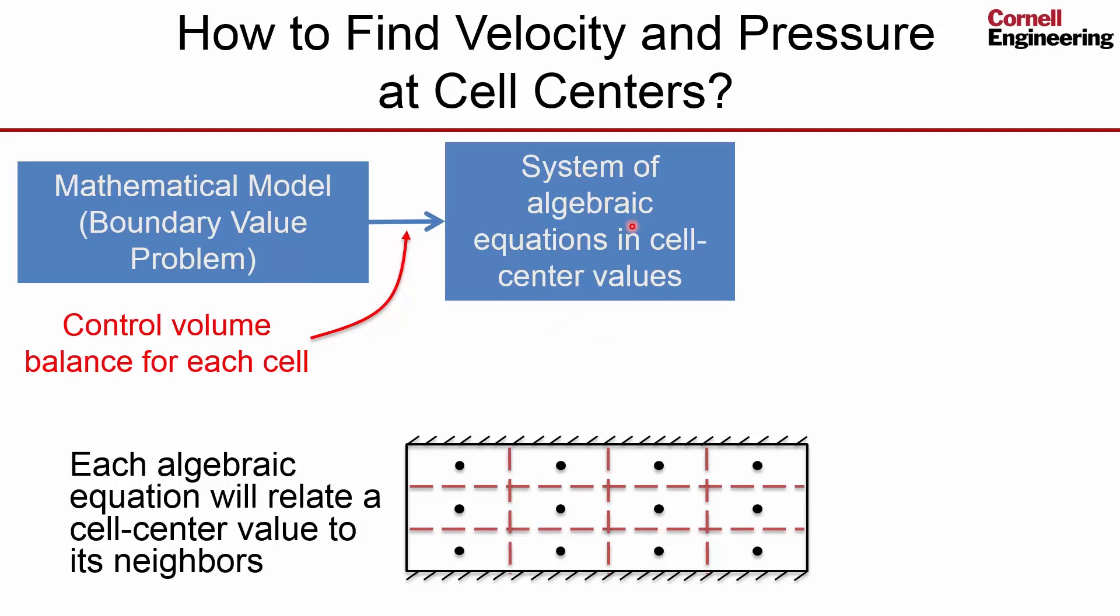And we can solve the system of algebraic equations. We can invert it on the computer to get the cell center values for u, v, p. In our particular case, you would have to invert a system of 36 algebraic equations. Engineers are now doing problems with a billion unknown values. So you're inverting a billion algebraic equations. And if you have a fast enough computer in today's world, you can do that in a good solver.